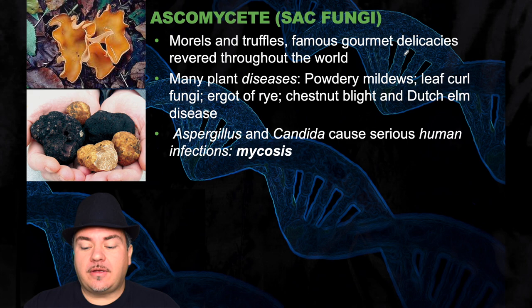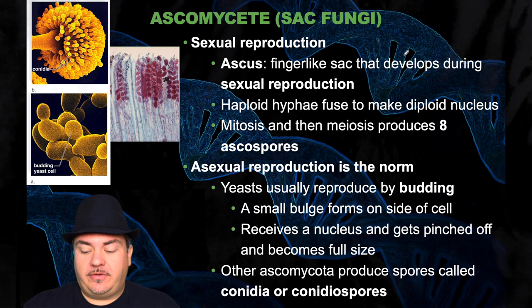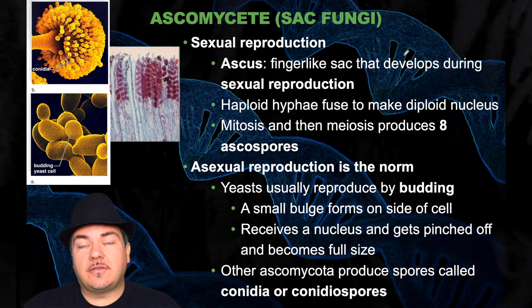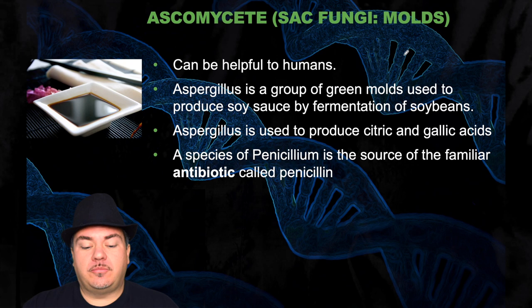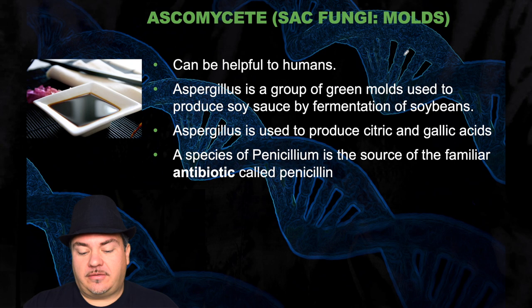They have both sexual and asexual reproduction. For example, yeast do asexual reproduction through budding — a small bulge forms on the side of the cell, it receives a nucleus and gets pinched off, becoming a new full cell and a new individual since yeast is unicellular. Other ascomycetes produce spores called conidia or conidiospores. The ascomycetes can be helpful to humans — for example, Aspergillus is a group of molds used to produce soy sauce by fermentation of soybeans, and also to produce citric and gallic acids. A species of Penicillium is the source of the antibiotic penicillin.